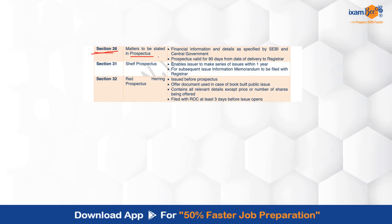You need to have detailed information — financial information — and all those details as specified by SEBI and the central government have to be provided. Then, the validity of the prospectus — a very favorite exam question — is 90 days from the date of delivery to the registrar. Prospectus is a very important document because prospective investors and the public at large will take a decision whether to invest in the company or not based on it. So everything stated in the prospectus has to be true and correct.